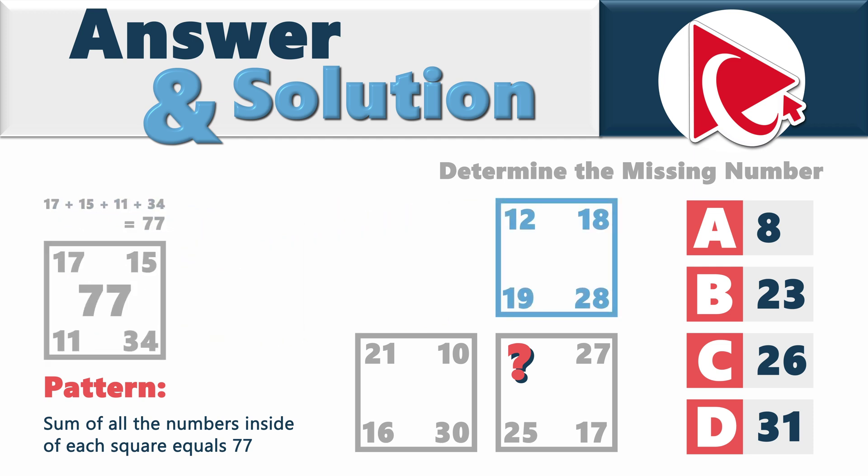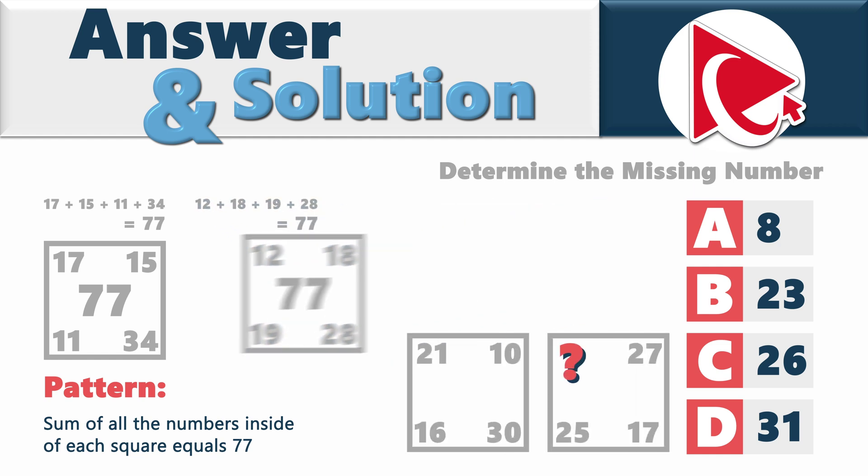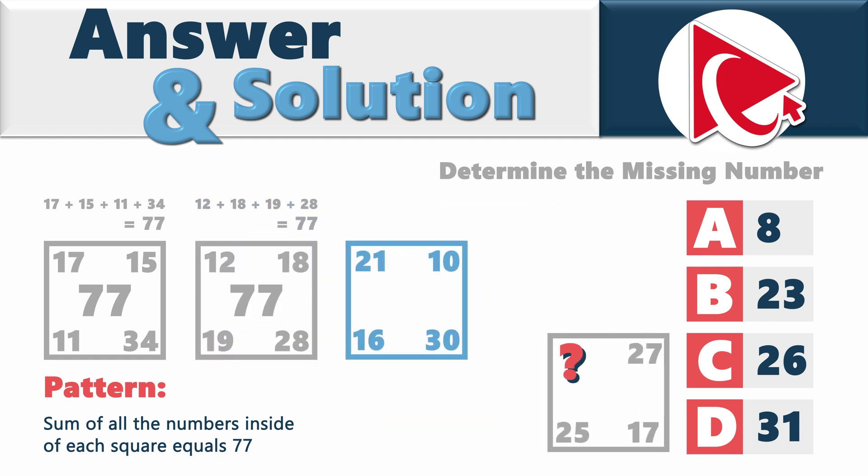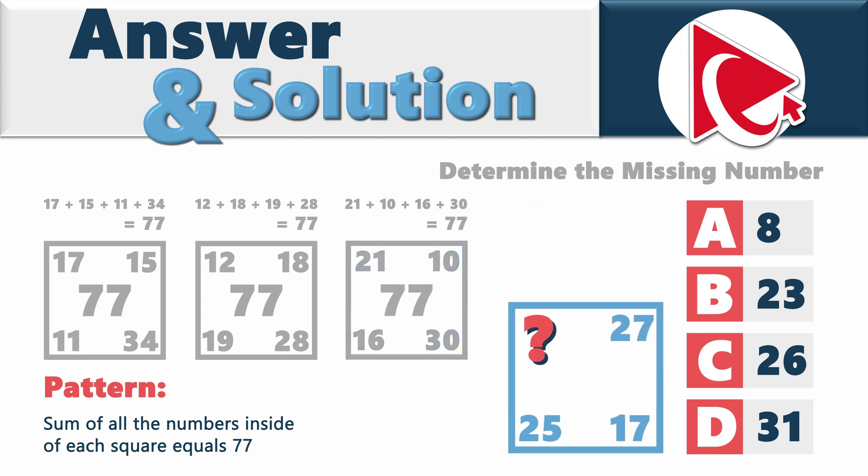Let's confirm it with the second square. 12 plus 18 plus 19 plus 28 also equals 77. Believe it or not, but in third square, 21 plus 10 plus 16 plus 30 also equals 77. Now we can calculate the missing number.